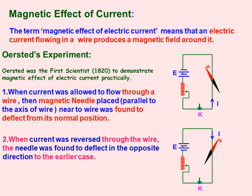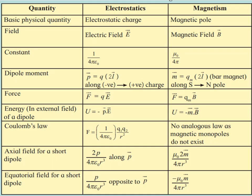Oersted was the first scientist to demonstrate the magnetic effect of electric current. Now, here is a chart giving the analogy between electrostatics and magnetism. In electrostatics, we use the electric field represented by symbol E. Here, we use the magnetic field represented by symbol B. In Coulomb's law, the constant is 1/(4πε₀), where ε₀ is the permittivity of free space. In magnetism, the constant changes to µ₀/(4π), where µ₀ is the permeability of free space.